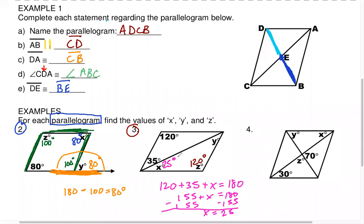Now using the property that opposite angles are congruent: if you have 35 degrees here, that flops over across to Y, so Y is 35 degrees. You can also take 25 degrees and flop that over to the other side — giving you two congruent triangles that are rotated around. X is 25 degrees, Y is 35 degrees, and Z is 120 degrees.